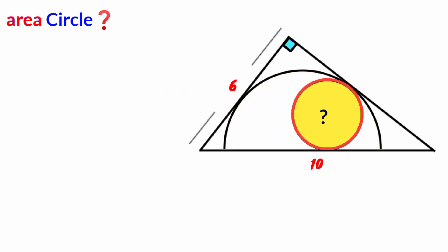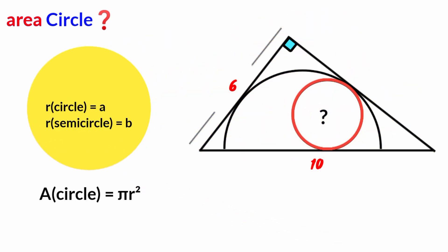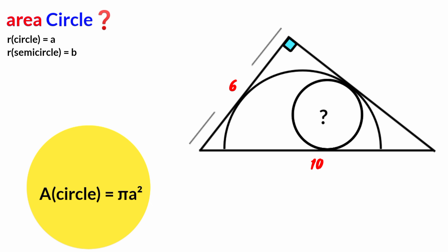The formula for calculating the area of a circle is π r squared, where π is a constant and r is the radius. But here we have a circle and a semicircle, each with its own radius. We let the radius of the circle be A and that of the semicircle be B. Therefore, area of circle equals π A squared.